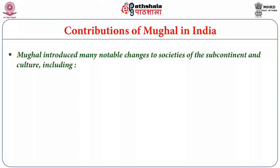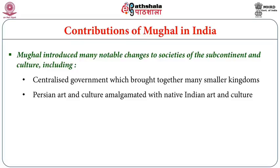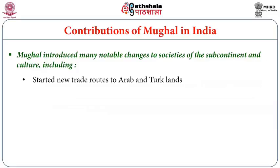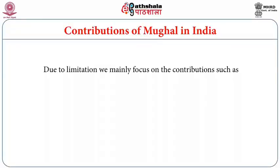We will now discuss the contributions of the six earlier Mughal emperors: Babur, Humayun, Akbar, Jahangir, Shah Jahan, and Aurangzeb. Mughals introduced notable changes including centralized government, the amalgamation of Persian and Indian art, new styles of architecture, new trade routes, Mughal cuisine, development of Urdu language, and landscape gardening. Due to limitations of scope, we will focus mainly on administration, painting, calligraphy, and architecture.